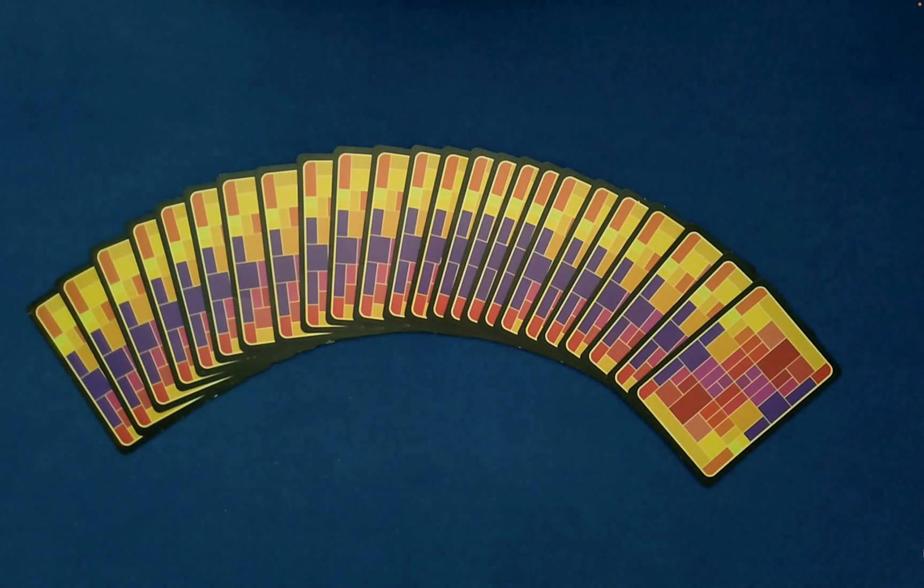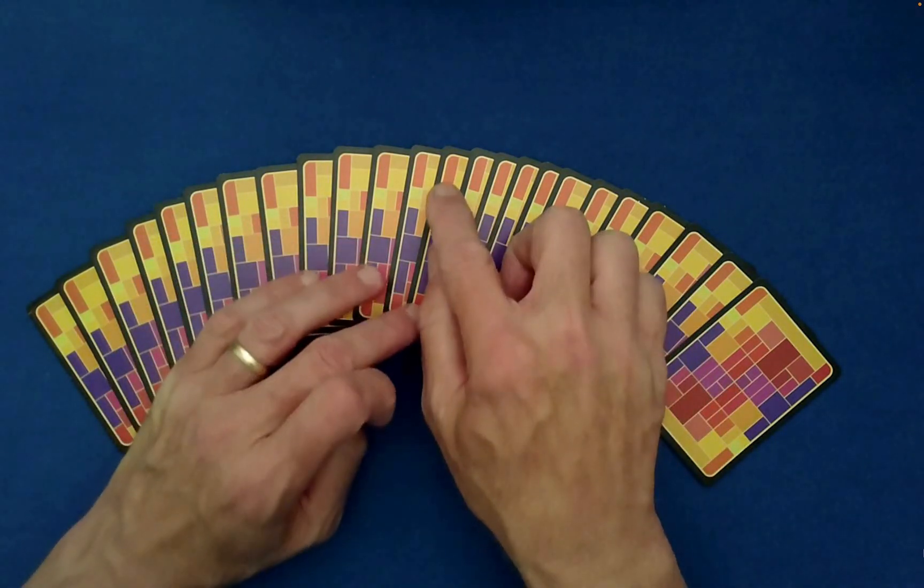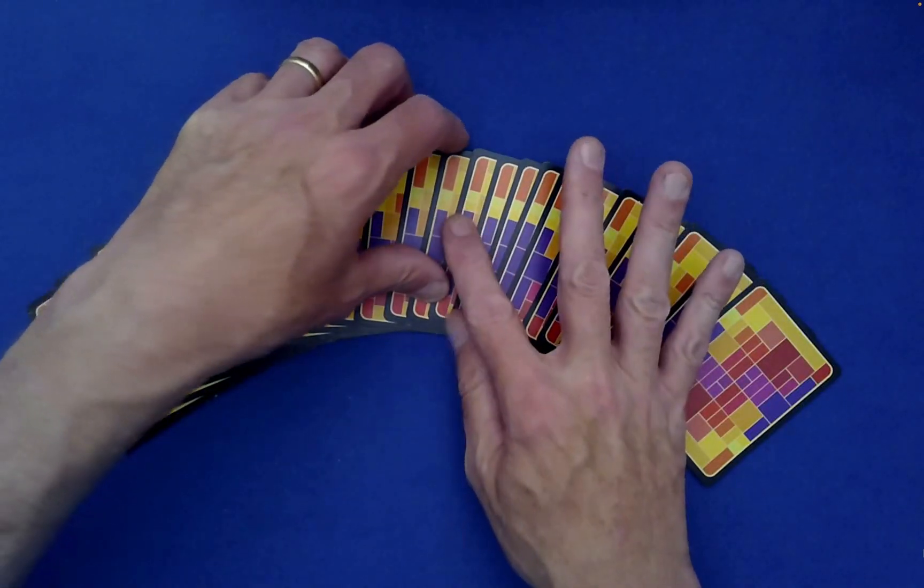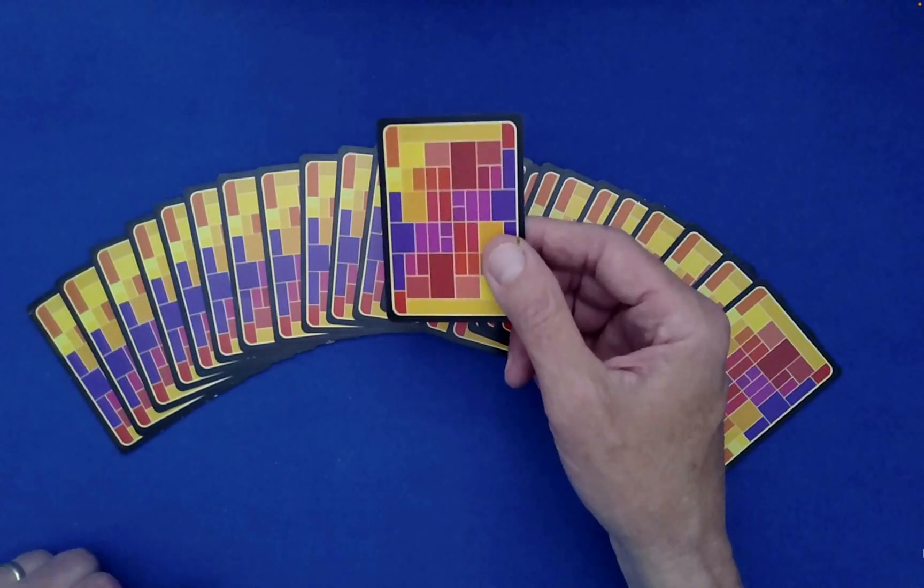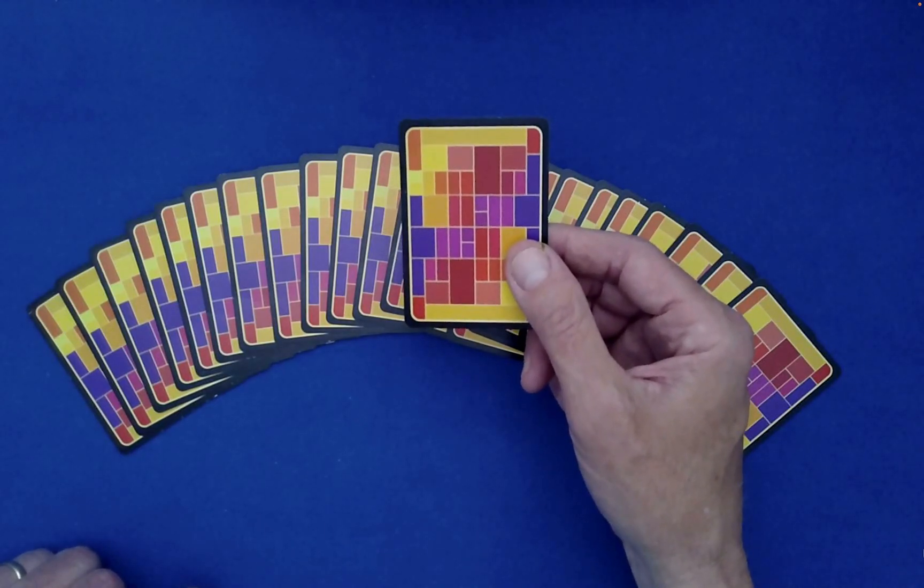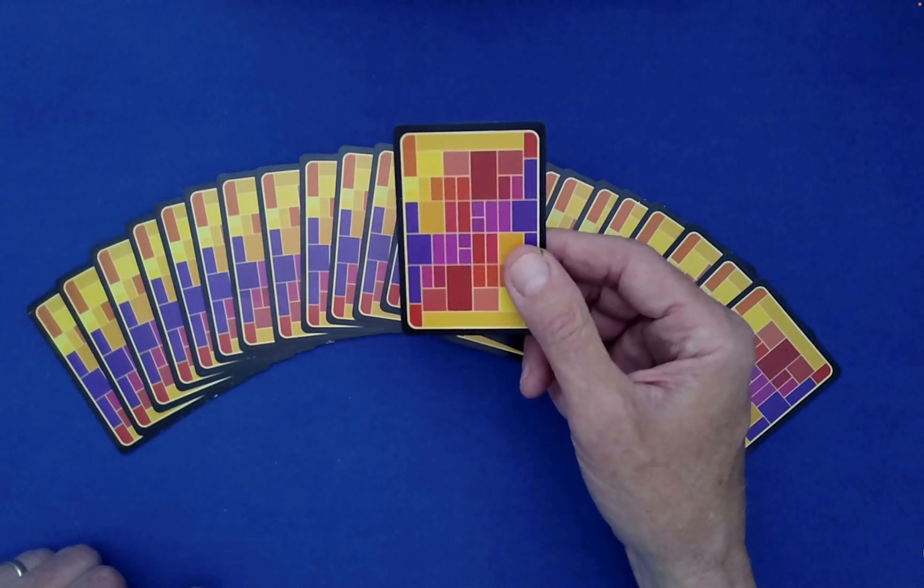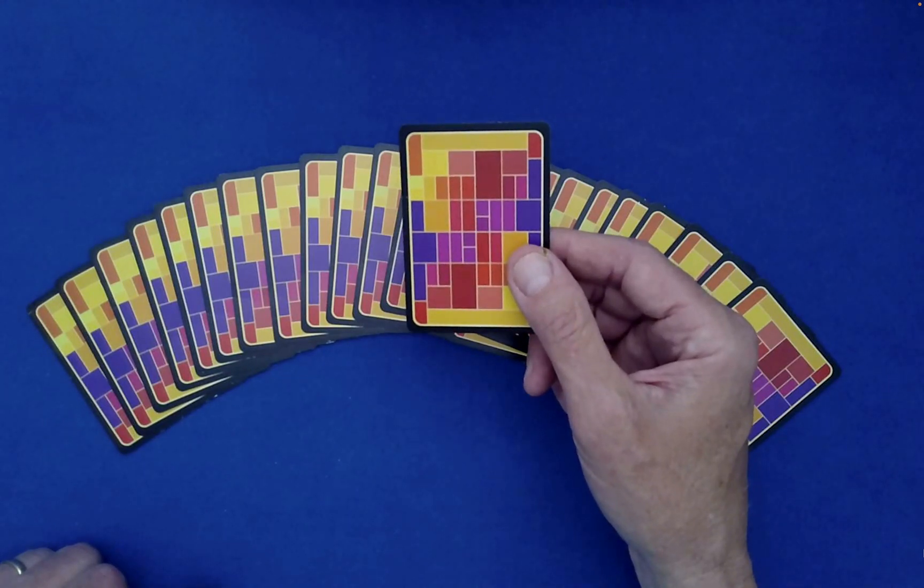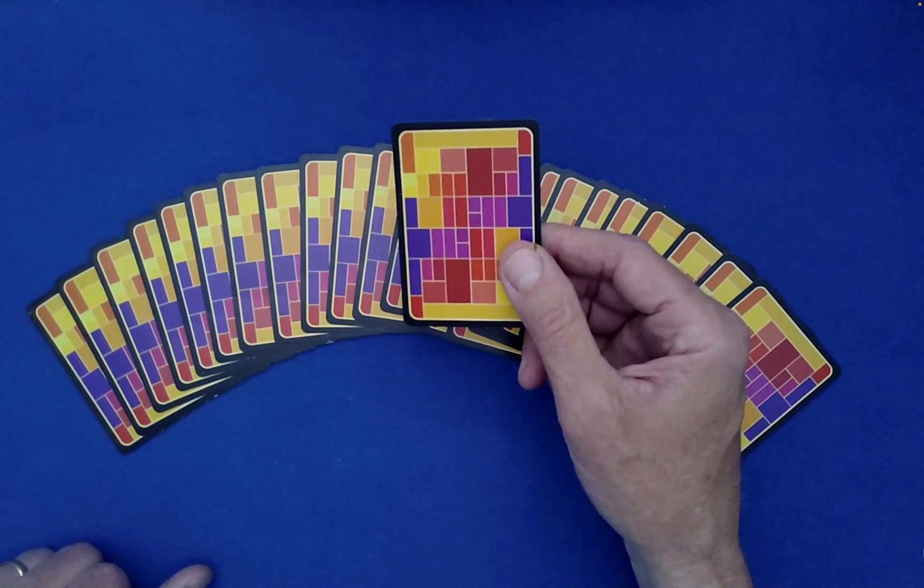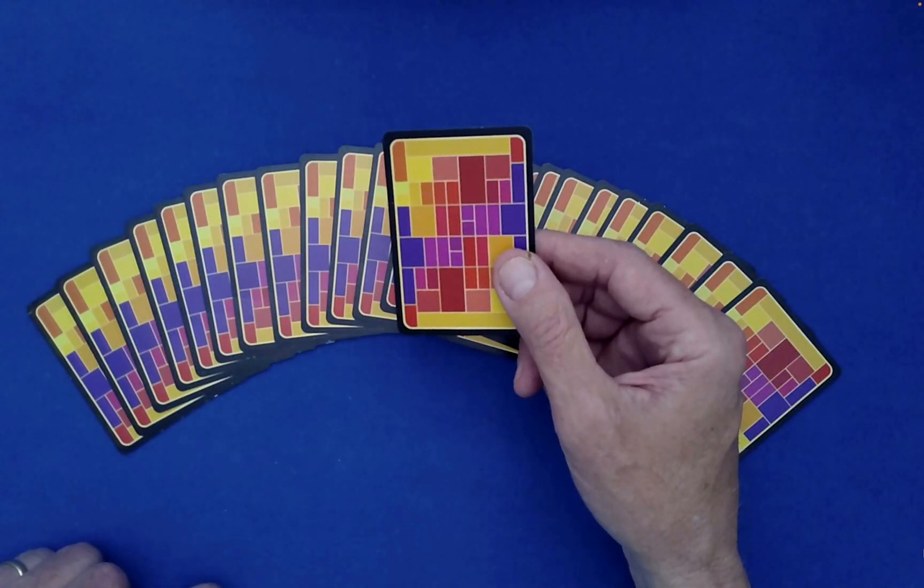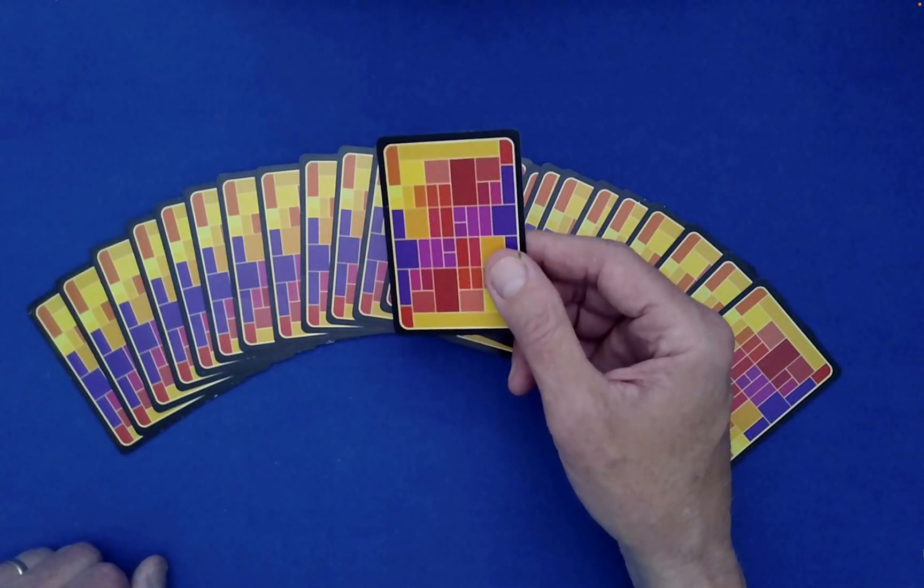So if you were here, I would have you point to any one of these 24 cards. Let's say you point to this one right here. Now what I'm going to do is turn away and hopefully angle it enough for you to see what it is. And then at the very end, after recording my video, I'll discover whether or not I was successful.